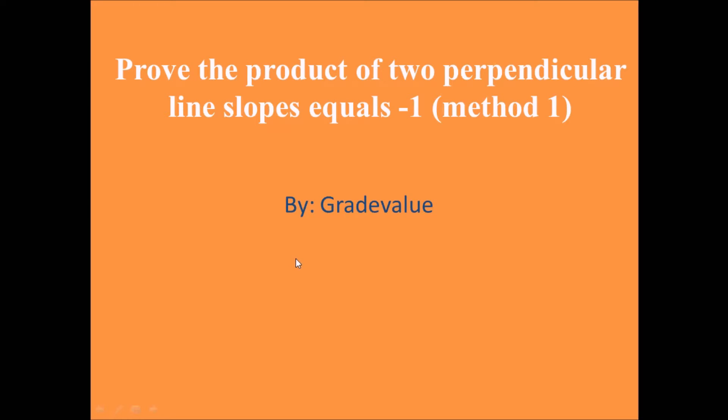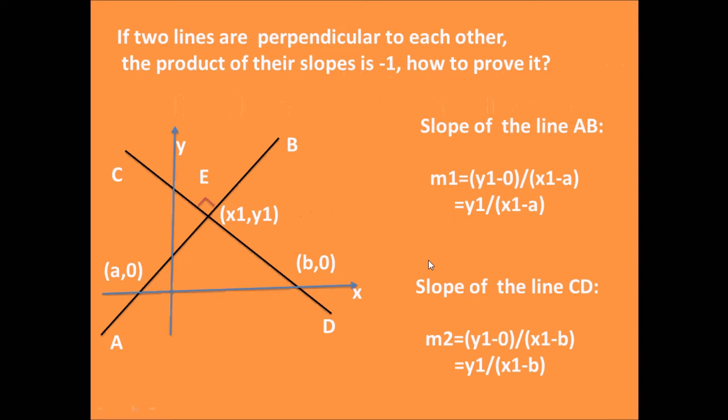Hello everyone, in today's lecture I want to show you how to prove the concept that if two lines are perpendicular to each other, the product of their slopes equals -1. We often use this statement to calculate line slope or verify whether two lines are perpendicular to each other. However, today I want to show you how to prove this statement.